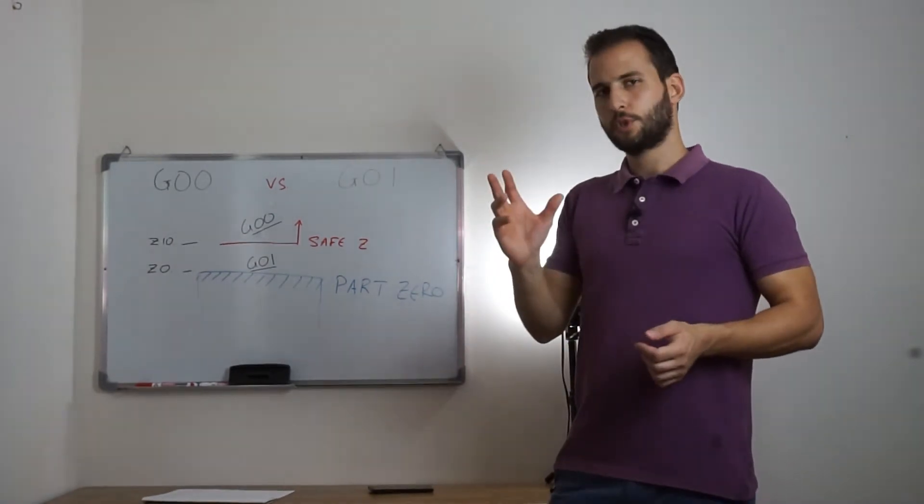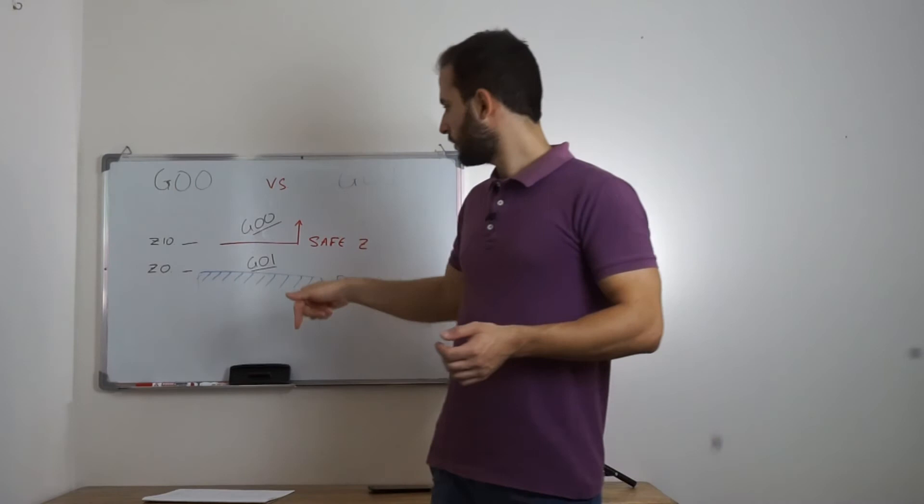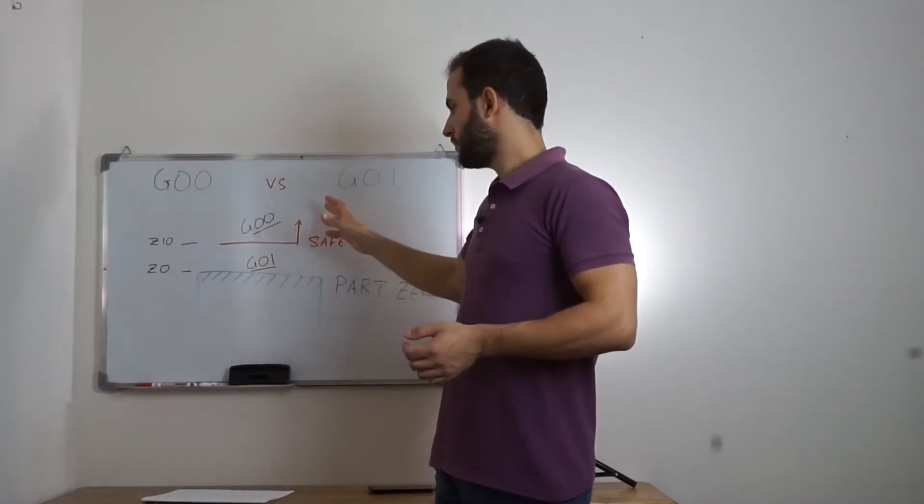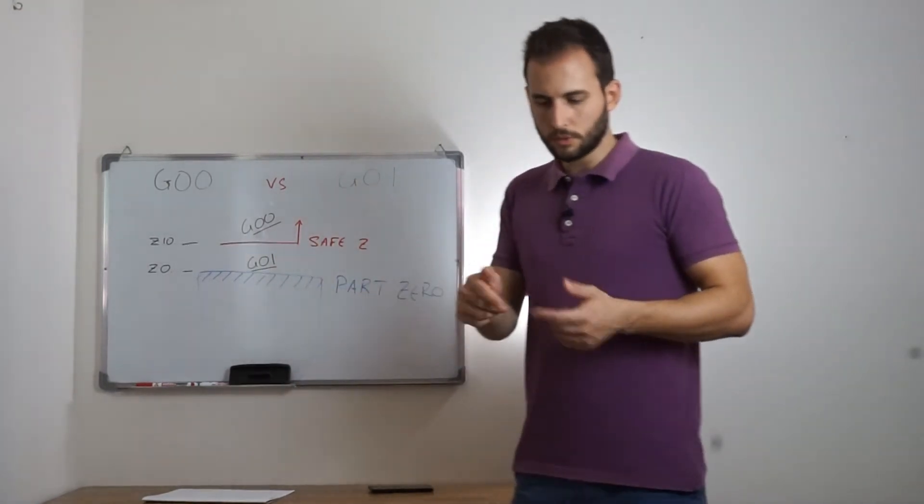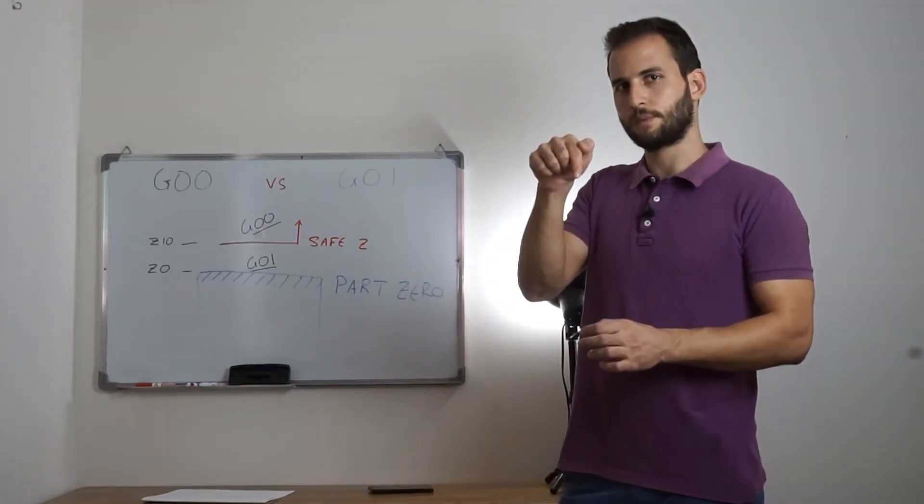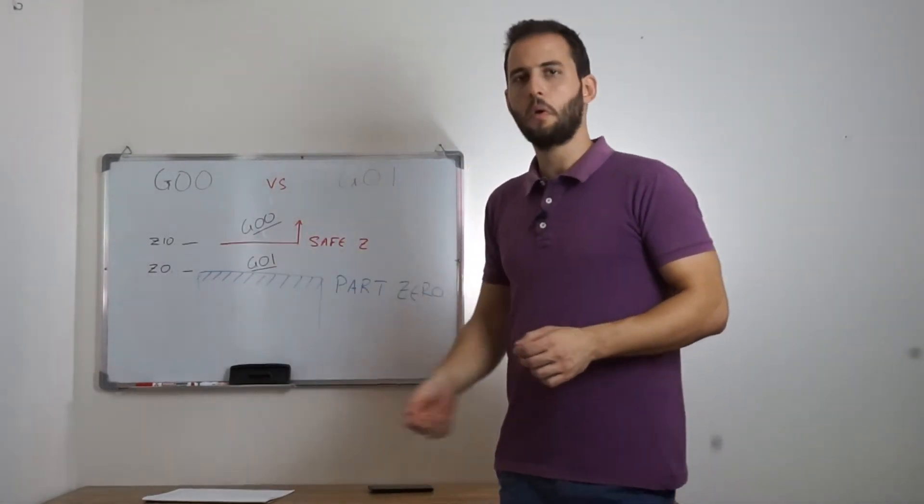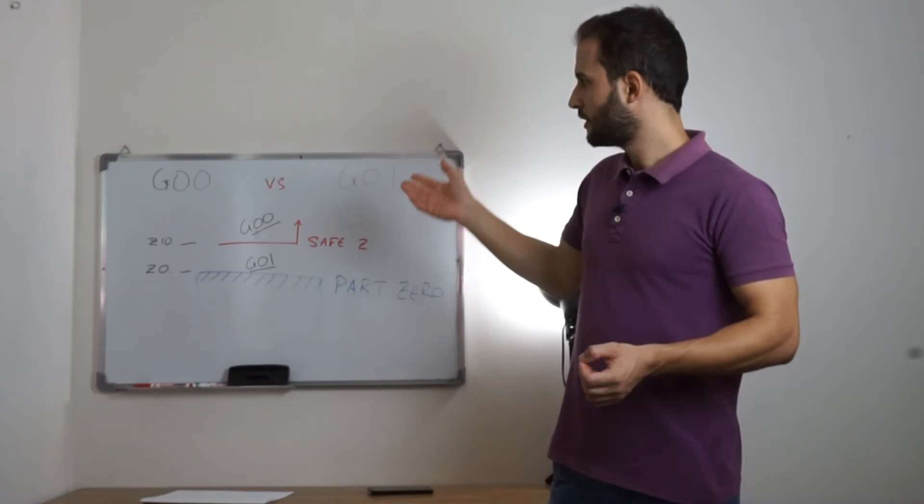The only exception is, for example, when we drill something or when we are in a pocket, or generally when we want to retract along the Z axis. When we want to retract along the Z axis, we can safely use G0.